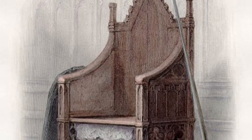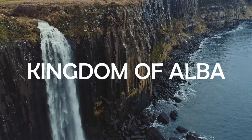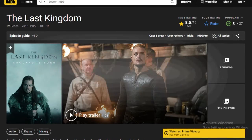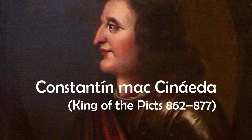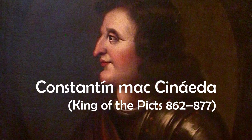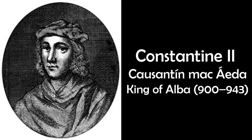There were actually three rulers of ancient Scotland, known as the Kingdom of Alba, who bore the name Constantine during the approximate period that The Last Kingdom is set in, mainly the 9th and 10th centuries AD. The first was Constantine MacCanada, sometimes referred to as Constantine I, King of the Picts from 862 to 877 AD. The second ruler was Constantine II, also known as Constantine MacAda, who ruled as King of Alba for an astonishing 43 years.